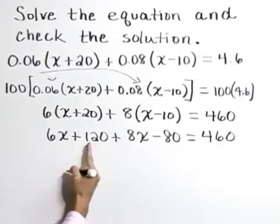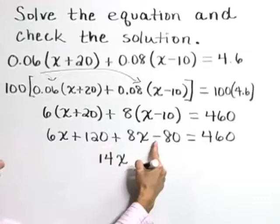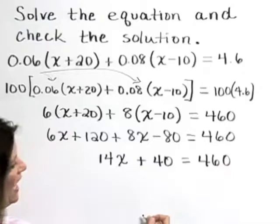Combining like terms on the left, 6x plus 8x is 14x. 120 minus 80 is 40.